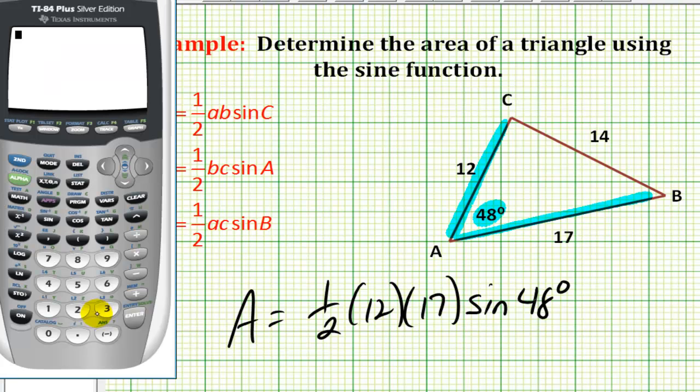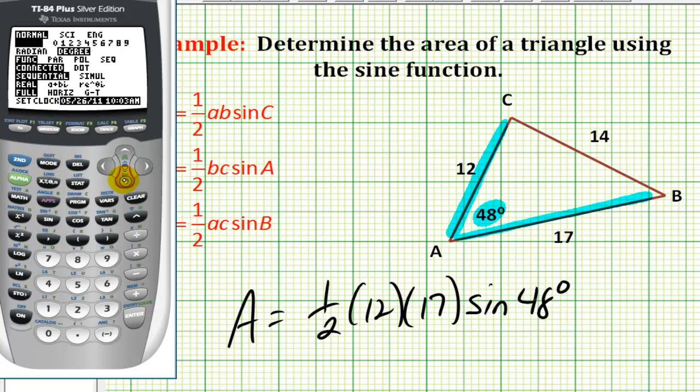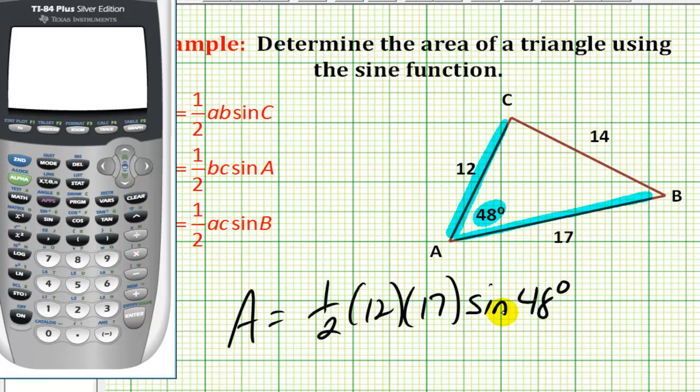Now we'll go to the calculator, and before we determine this product, we need to make sure that we are in degree mode. We'll press mode, go down to row three, make sure that degree is highlighted, press enter. And now we can go back to the home screen and type in our product: 1/2 times 12 times 17 times sine 48 degrees.